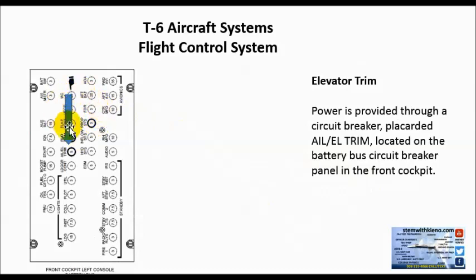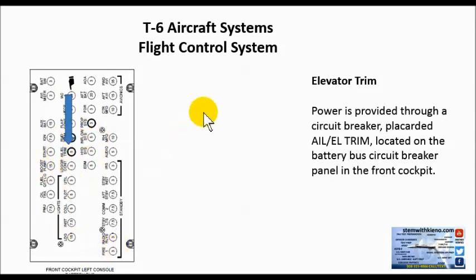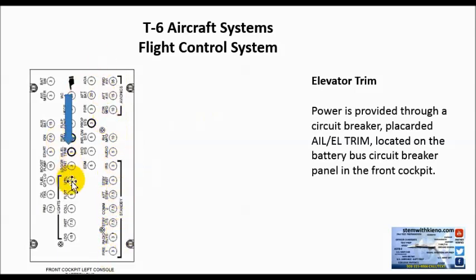Power is provided through a circuit breaker placarded 'AIL and EL TRIM,' which is your aileron and elevator trim. You would know there's a failure if you run your fingers across these circuit breakers and one pops out. During your pre-flight or pre-takeoff inspection, you can rub your fingers gently across the top. If they pop out, there's an issue. Sometimes a circuit breaker will just pop out on its own without you adding any pressure.